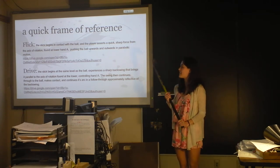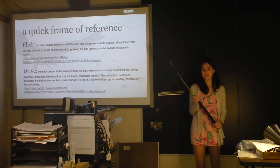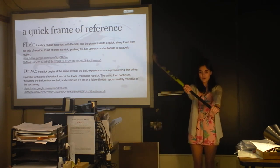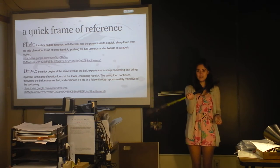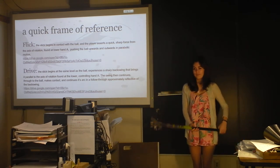So with a flick, the stick remains in contact with the ball, and the player exerts a quick, sharp force from the axis of rotation. When you're just playing, you hold your hands apart like this, so the axis of rotation is the lower one. If your ball is here, you just push up, and you don't have a backswing at all. It just goes straight up.